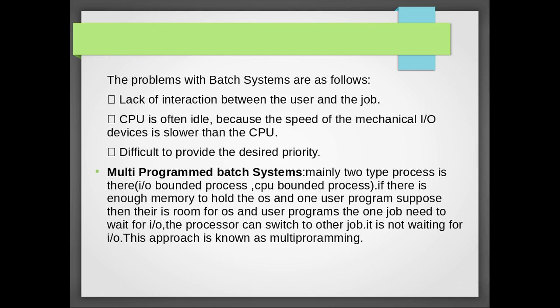An IO-bounded process is one that makes frequent IO device requests. A CPU-bounded process primarily uses the CPU. If there is enough memory to hold the operating system and one user program, one job need not wait while another is executing.